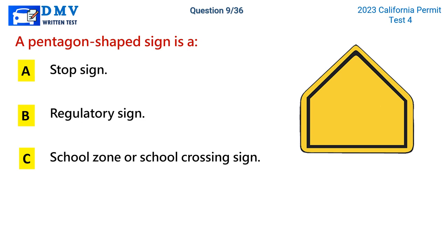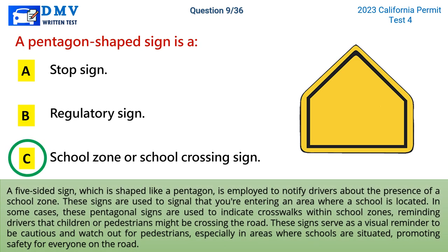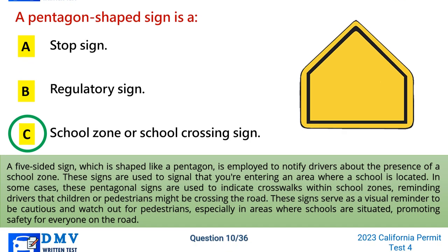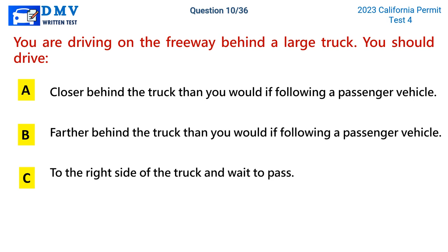Question 9: A pentagon-shaped sign is. A) a stop sign, B) a regulatory sign, C) a school zone or school crossing sign. The correct answer is C. A five-sided sign shaped like a pentagon is used to notify drivers about the presence of a school zone. These signs signal that you're entering an area where a school is located, and in some cases indicate crosswalks within school zones, reminding drivers that children or pedestrians might be crossing. They serve as a visual reminder to be cautious and watch for pedestrians.